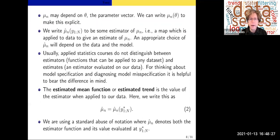The trend μn may depend on theta, the parameter vector. In that case we write μn(θ) when we want to make it explicit; sometimes we won't write the theta, we'll just know that it's there. We don't know the trend; it's part of the model, not part of the data. So we write μ̂n(y) to be some estimator of μn. An estimator is a map or function which applied to the data gives an estimate of μn. An appropriate choice of μ̂n will depend on the data and the model.